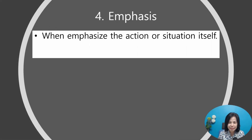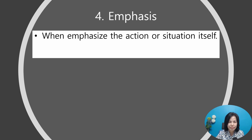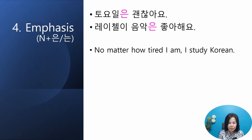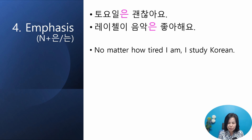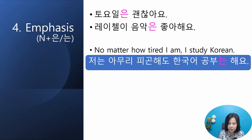The last usage: emphasis. 은/는 also emphasizes the action or situation itself. It can be added after a noun, an ending, or an adverb. For the noun case: 토요일은 괜찮아요 — maybe the other days are not good. 레이첼이 음악은 좋아해요 — the speaker knows she likes music, at least. Your turn: 'No matter how tired I am, I study Korean.' Answer: 저는 아무리 피곤해도 한국어 공부는 해요.